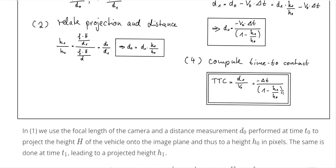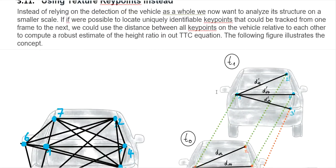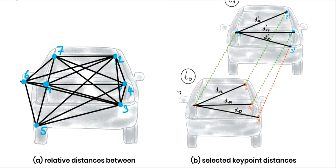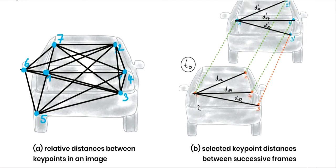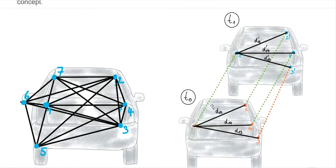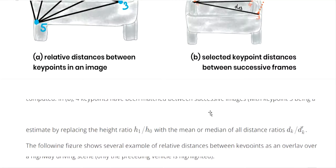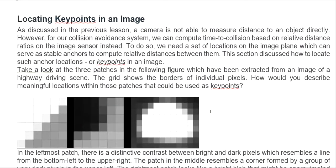This formula relies on the ratio between the height of the object on the image plane. After that, I mentioned a little bit about the key points to calculate the ratio. We select the key point distance between successive frames — two successive frames, t equals 0 and t equals 1. So now we figure out what the key points on the image are and how we define the location of key points.